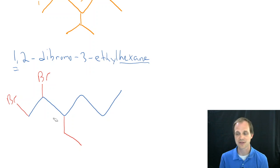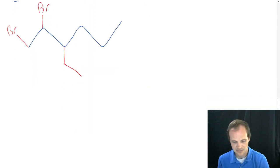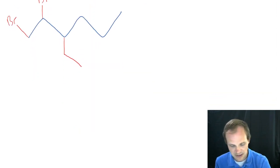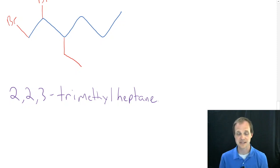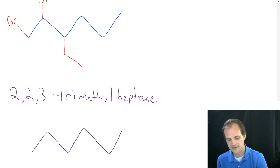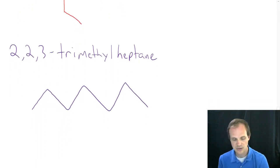Our next example is going to be 2,2,3-trimethylheptane. And if you remember, hept is 7. So we're going to do 1, 2, 3, 4, 5, 6, 7. And 2, 2, 3.